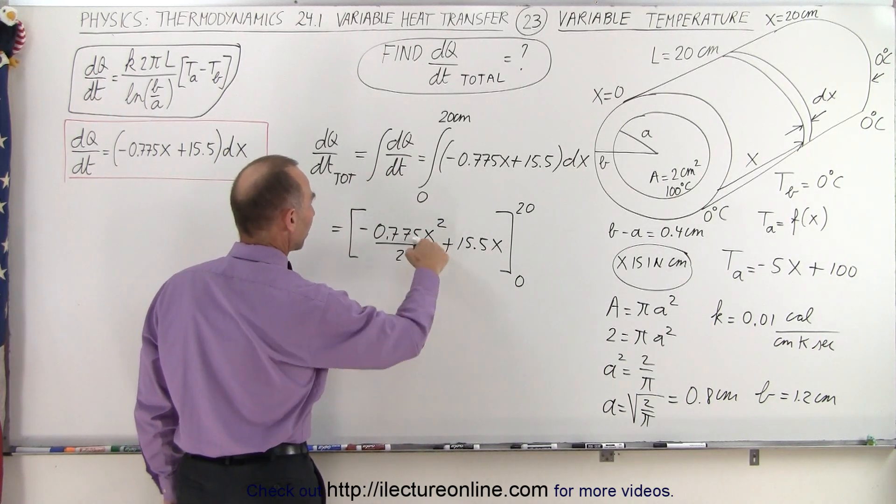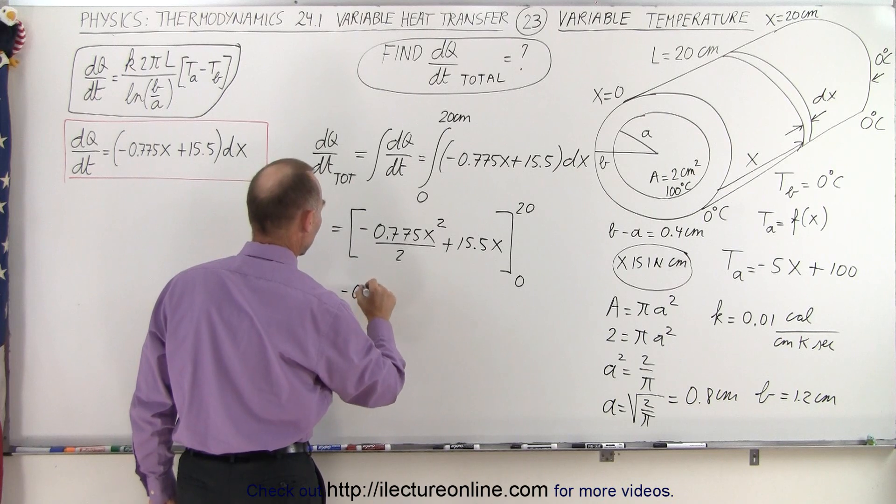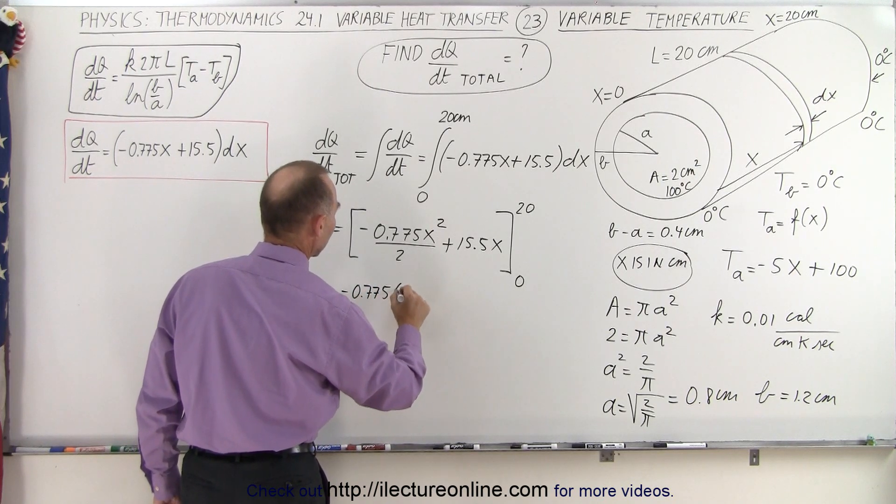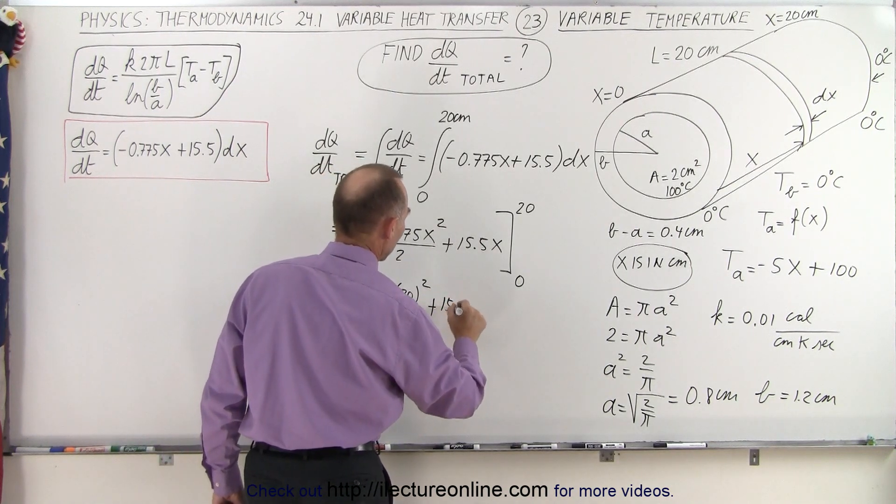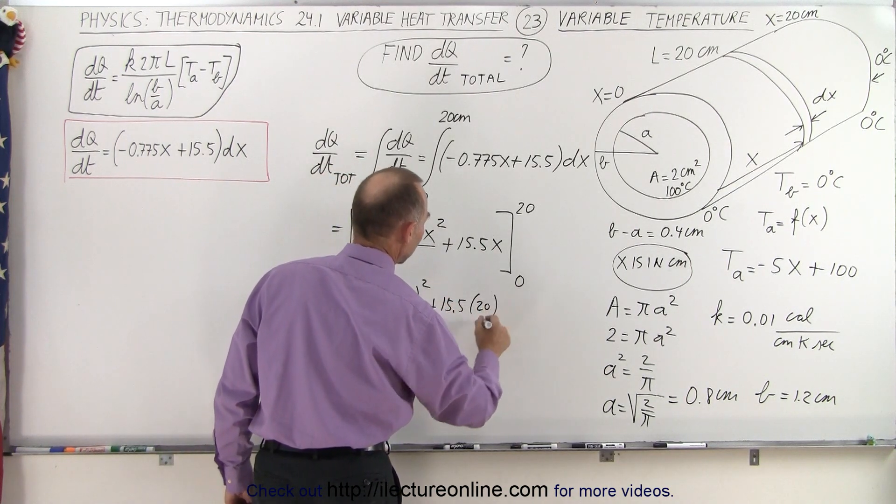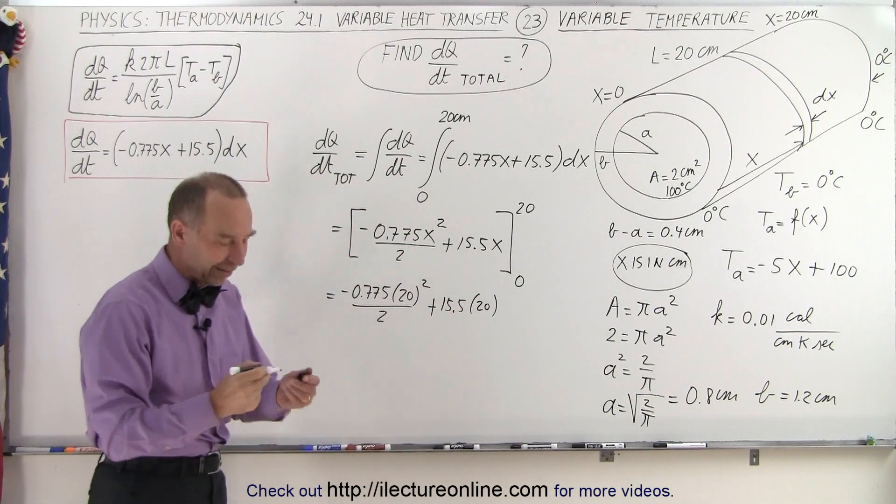So this is equal to minus 0.775 times 20 squared divided by 2 plus 15.5 times 20. Of course, when we plug in the lower limit, we get 0.